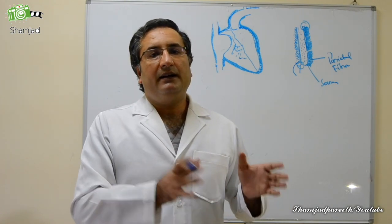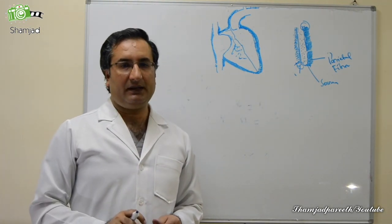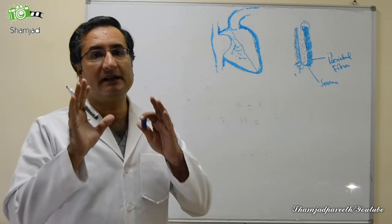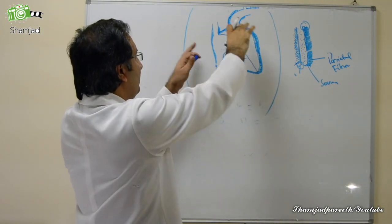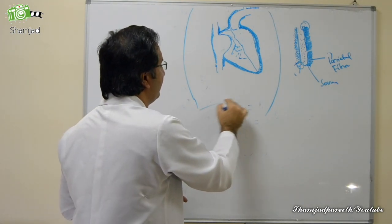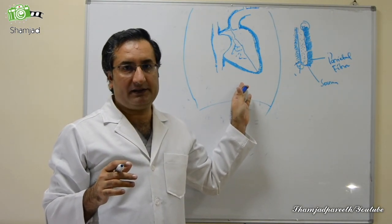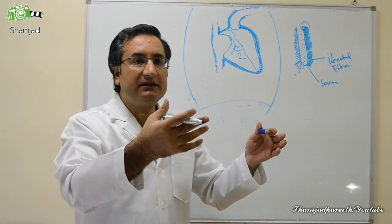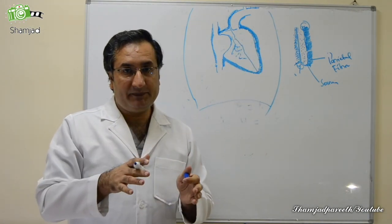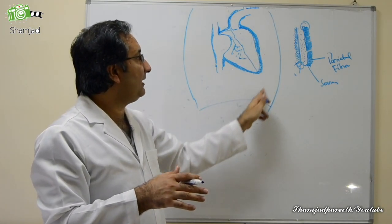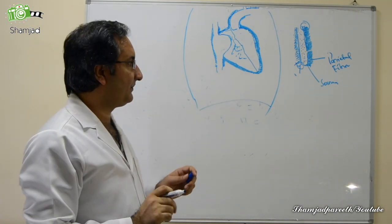Before understanding cardiac catheterization, one basic concept is needed. Normally, variation of intrathoracic pressure is transmitted through the pericardium into the cardiac chambers. But if the pericardium is thickened and restricting the heart, this variation in intrathoracic pressure does not get transmitted into the cardiac chambers — and this has important consequences.